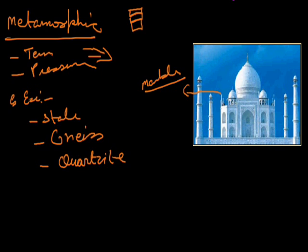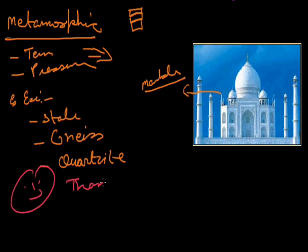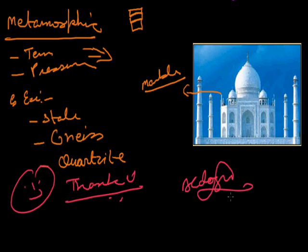So this is how we see three different types of rocks found on earth. If you want any clarification on these three types of rocks, you can comment. I hope this is clear. Thank you. In the next part, we will cover the rock cycle.